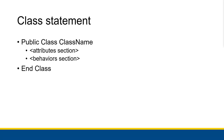When you are actually creating your own class, you have to write a class definition, which you have seen before as the definition for the form main class. A class definition starts with 'Public Class' and then the name of the class. Then you write down all of the attributes, then all of the behaviors, and then you write 'End Class' at the very end. In the next two videos we'll talk about what you put in the attribute section and what you put in the behavior section.